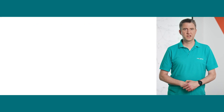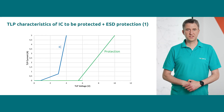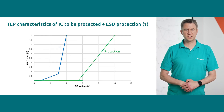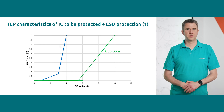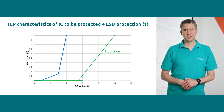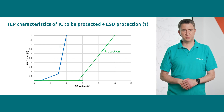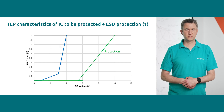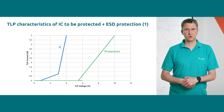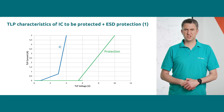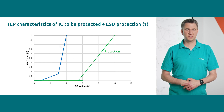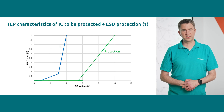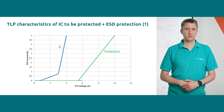In the first case, we see the IC's TLP curve always stays lower than that of the external protection. This means that the IC's built-in protection always triggers earlier and clamps low. The external protection does not work in this case. It needs to be replaced by a protection that triggers lower and provides a lower clamping voltage.